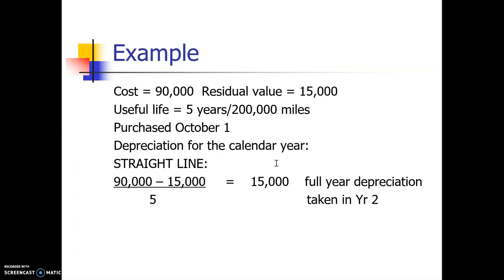When we get to year two, we can take the full year — $15,000. Year three is also $15,000, year four is $15,000, and so on for however many years until the year that you dispose of the asset.